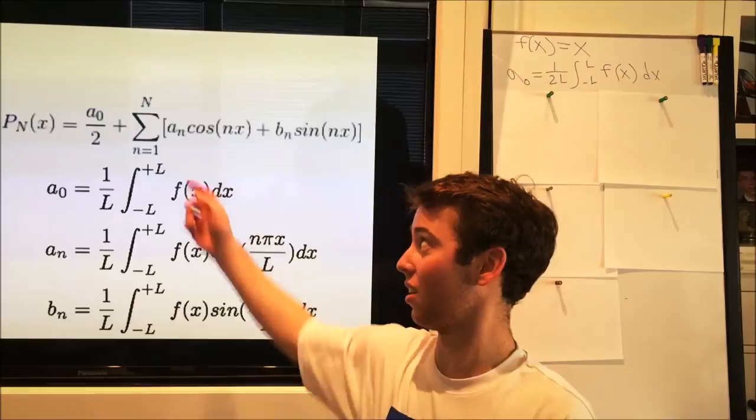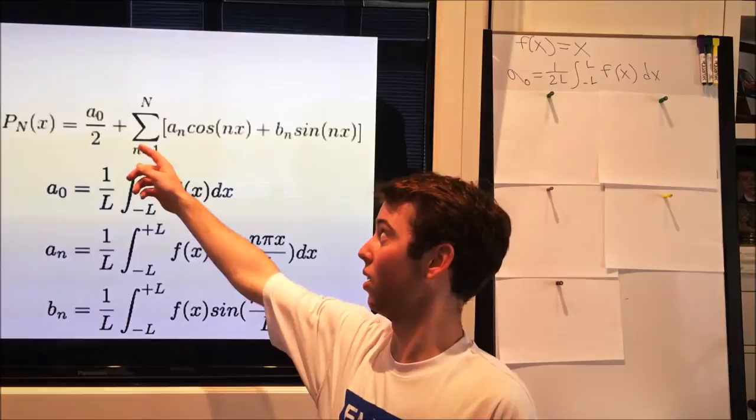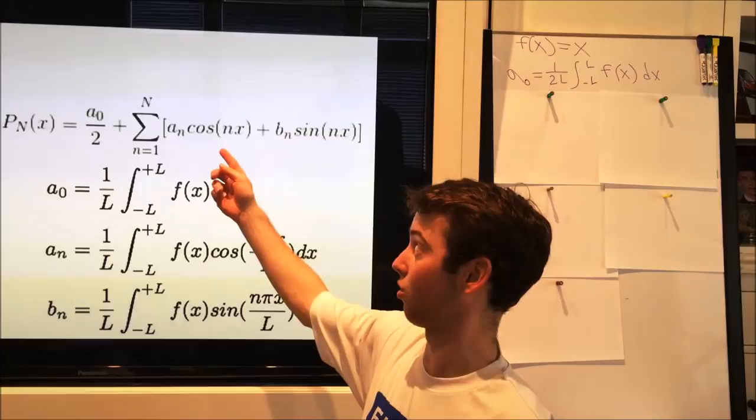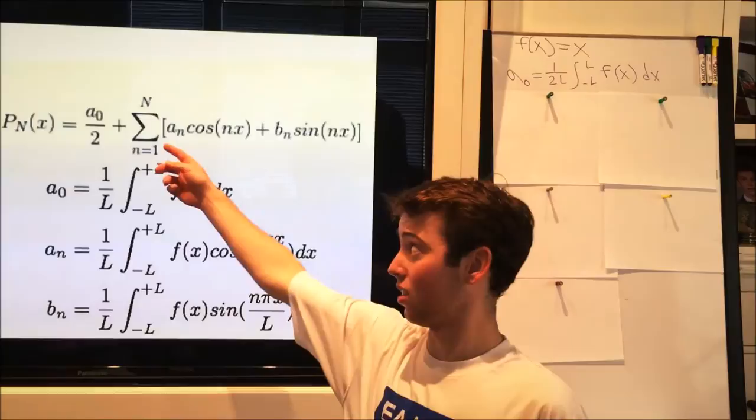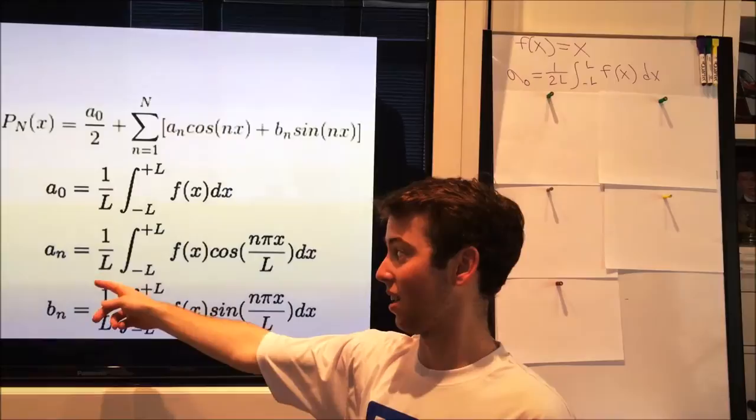The equation for Fourier's polynomials is listed here. It shows that Fourier's polynomial is equal to a constant a_0 plus the sum of n amount of his coefficients. The coefficients listed in this equation are solved for in these three equations here: a_0, a_n, and b_n.